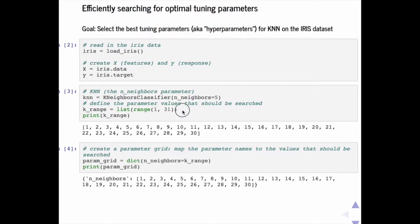Now, we are defining the parameters here. We are defining the parameters values that should be searched. We want to search in the values between 1 and 30. As we see here, the list was created.